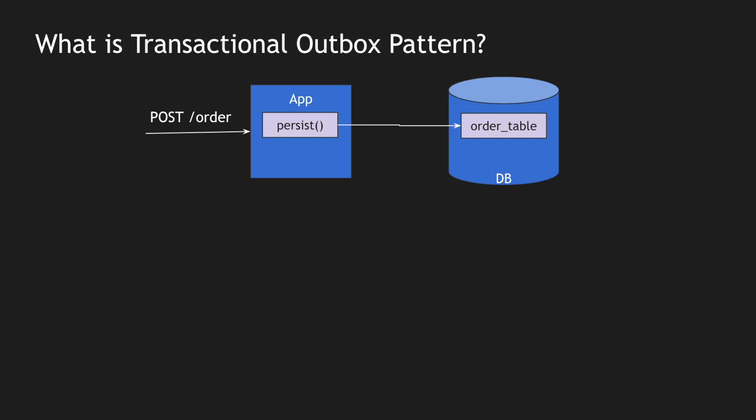In addition, we need to publish the message into the queue. To do two different operations, one option is a two-phase commit, but I don't want to make the POST REST endpoint complicated. So instead, I'll create a persist-outbox flow where it persists messages into an outbox table — for example, marking the order ID with a status indicating the message needs to be published.